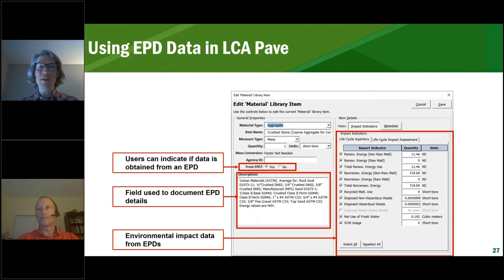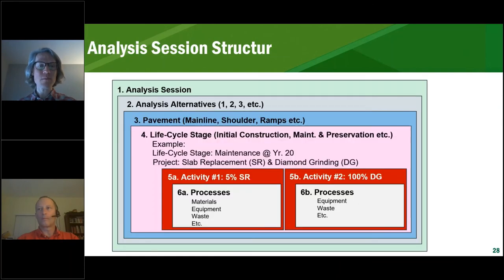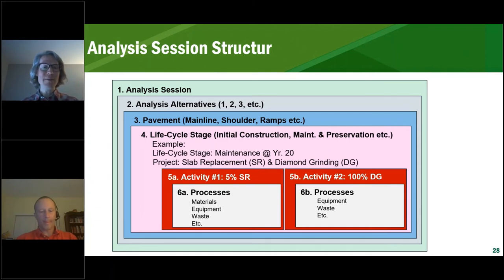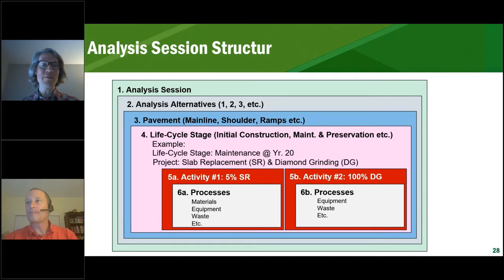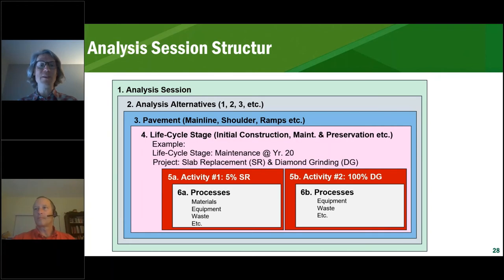There's another tie to the Federal FHWA LCA framework that John presented earlier — all the impact categories and flows from the LCI are reflected in this tool and can be used to report EPD data. Within the tool you start an analysis session when you want to compare something. Within that you can define different alternatives for different design options, treatments, or different life cycles — with the years of how far out you model a pavement, as in the example John showed. You can say what part of the pavement you want to model: mainline, shoulder, ramps — basically your system boundaries. Within that you can define the specific activities, and within those activities what data from the database you need in terms of materials, equipment, waste, etc.